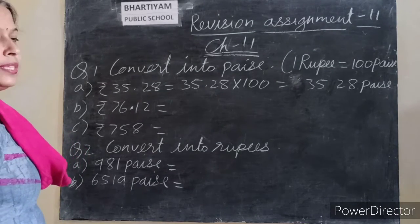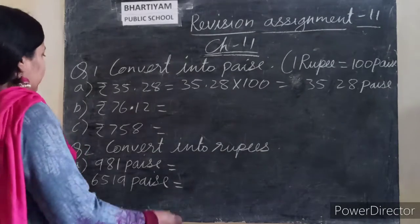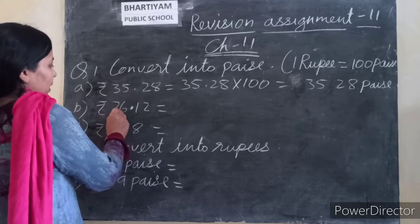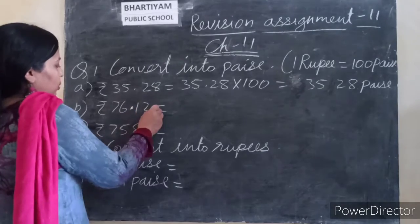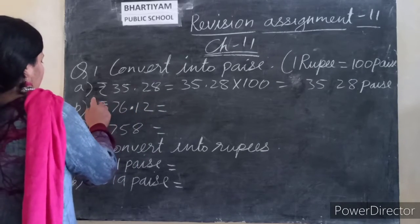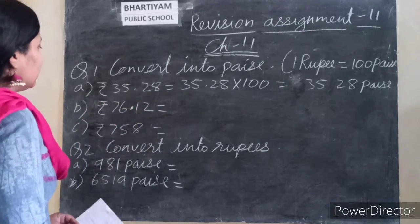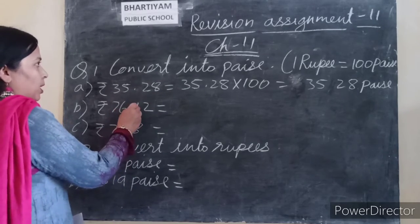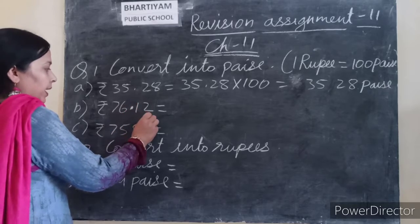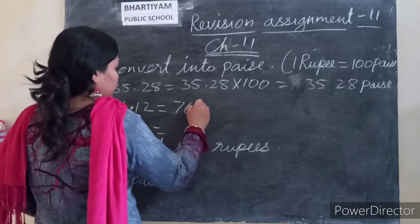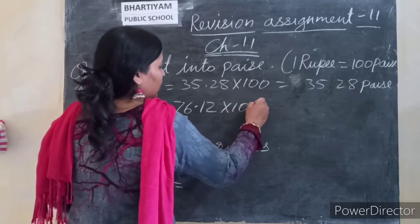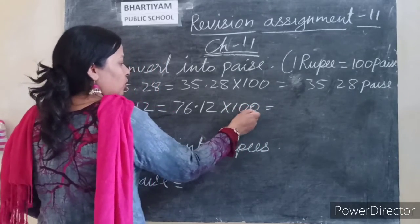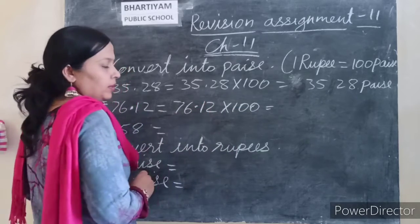3528 paise. Next is 76.12 rupees. We will also multiply 76.12 by 100, and the decimal point will move. Why? Because when we multiply by 100, the decimal point moves 2 places back — that gives us 7612 paise.